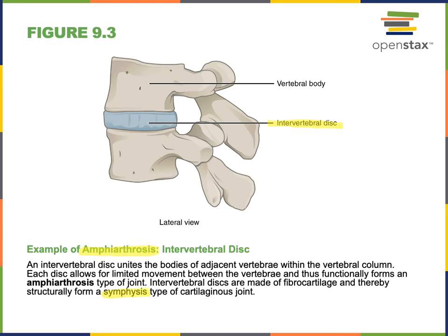A symphysis is the structural subcategory of amphiarthrosis — a slightly mobile joint where the bones are held together by cartilage. Typically, fibrocartilage is the type of connective tissue found at a symphysis, allowing a slight amount of motion between the articulating bones.